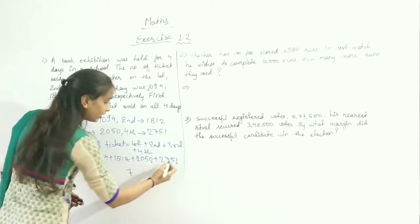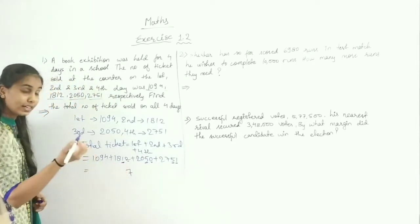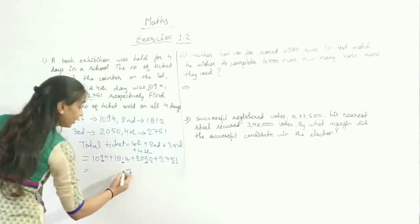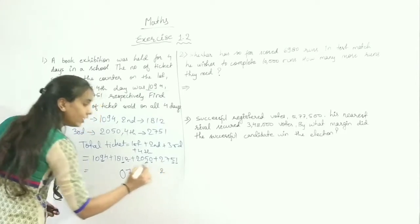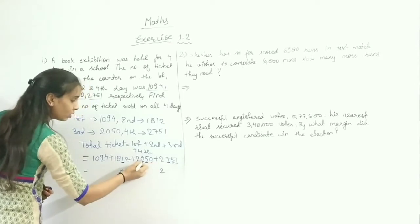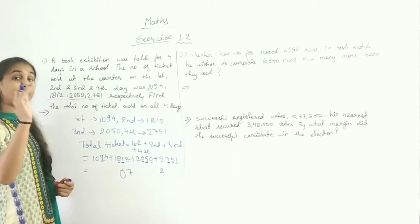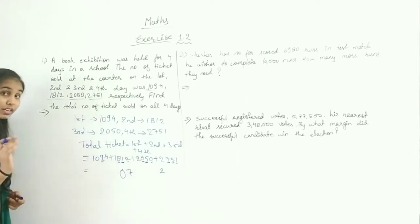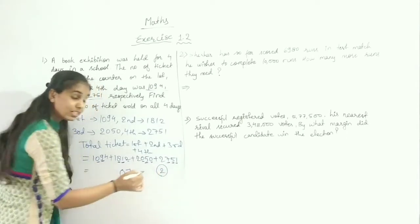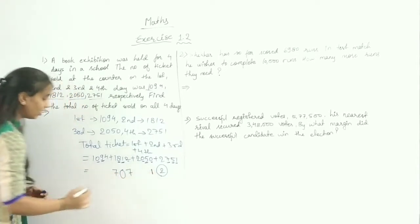Now let's move to the tens digit: 5 plus 5 is 10, plus 1 is 11, plus 9 is 20. So we write 0 and carry 2. Moving to the hundreds digit: 7 plus 0 is 7, plus 8 is 15, plus 0 is 15, plus carry 2 is 17. Write 7, carry 1. Thousands digit: 2 plus 2 is 4, plus 1 is 5, plus 1 is 6, plus carry 1 is 7. So the total is 7,707.